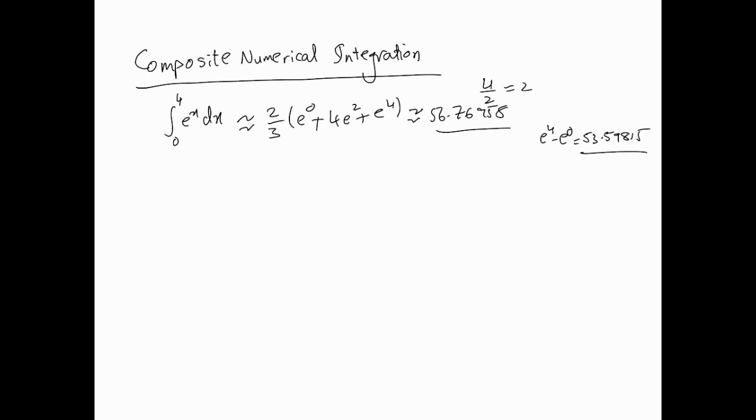Now, one way to overcome this is we know that integration is a linear process, and we can split the interval 0 to 4 into smaller intervals. For instance, we can say the integral is equal to the integral of e^x from 0 to 2 plus the integral from 2 to 4 of e^x dx.